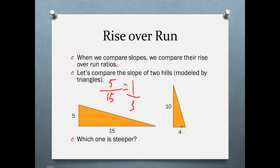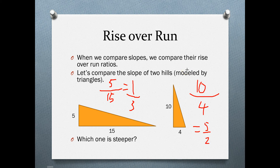For the second hill, when we climb to the top we have a 10 change in vertical distance over a 4 change in horizontal distance. So the slope is 10 over 4, which equals five over two. Which one is steeper? From our math, the triangle on the right is steeper because the slope is greater. We can also tell just by looking at it — and our math proves it correctly.